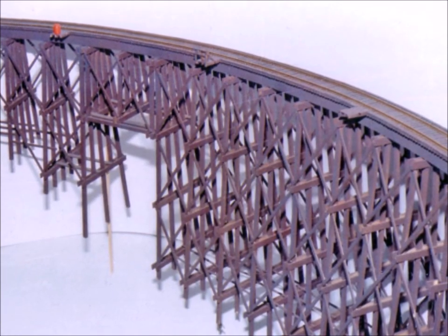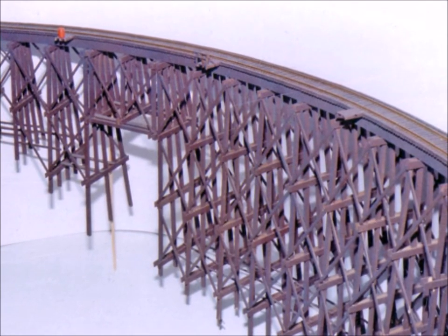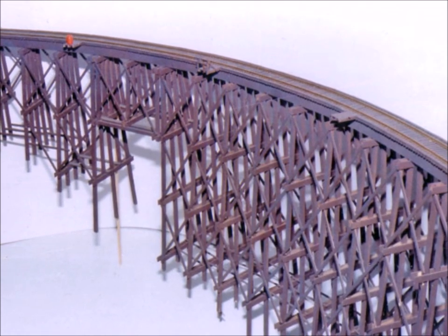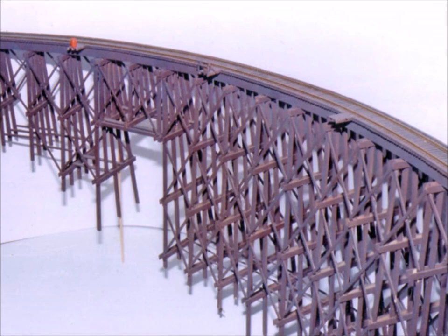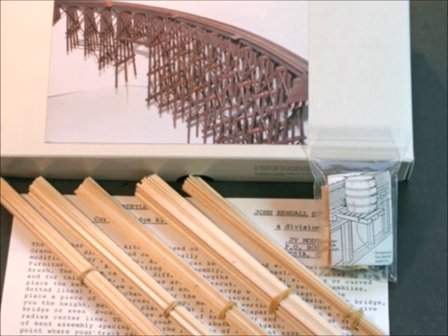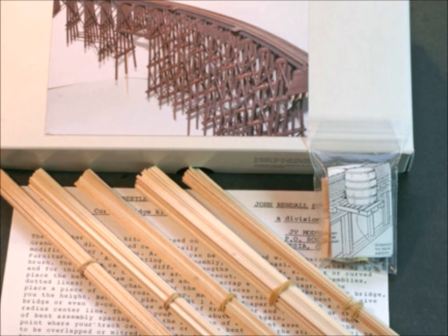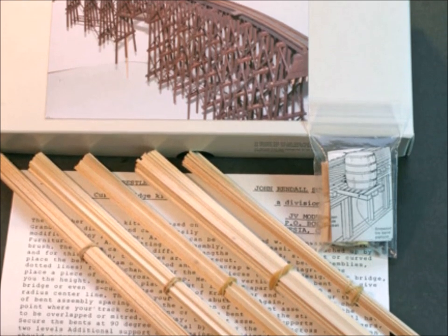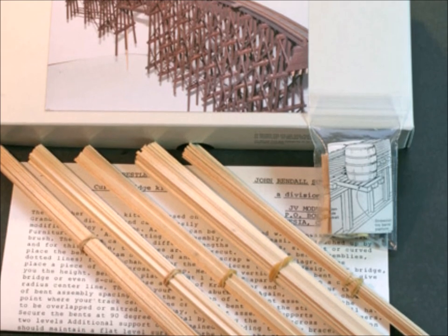All right, in episode number 21 of Murphy's Welcome to My World, we're going to be building a JV Models Company curved bridge kit. This is a fun little kit. When you open up the box it just looks like you get a fistful of sticks, doesn't look like much to start, but it does also have some very complete directions.